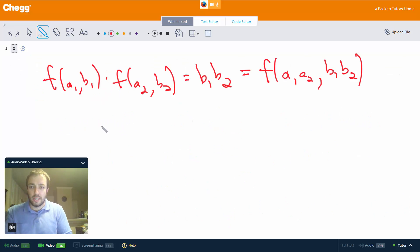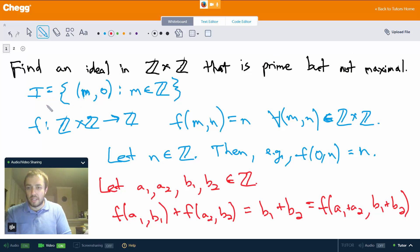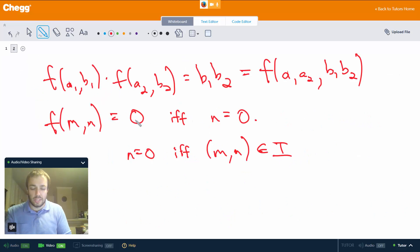Now what we want to check is the kernel of f. So notice that f(m,n) = 0 if and only if n = 0. So m could be anything we want it to be. But notice that n = 0 if and only if (m,n) is an element of our ideal I that we defined earlier. We kind of took it for granted that this is an ideal. It's not too hard to show, but we will skip that for this video. So f(m,n) = 0 if and only if n = 0, and n = 0 if and only if (m,n) is in I.